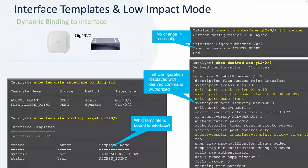After authentication, even though we still have the source template access point statically defined at the top, we now have a different template being used on the interface dynamically. The 'show derived interface GI1/0/2' command allows us to see what is actually dynamically defined on an interface for that specific session or sessions if there are multiple clients. You can see the interface binding with two templates assigned — one statically and one dynamically — and the port went from a switchport mode access to a trunk interface.